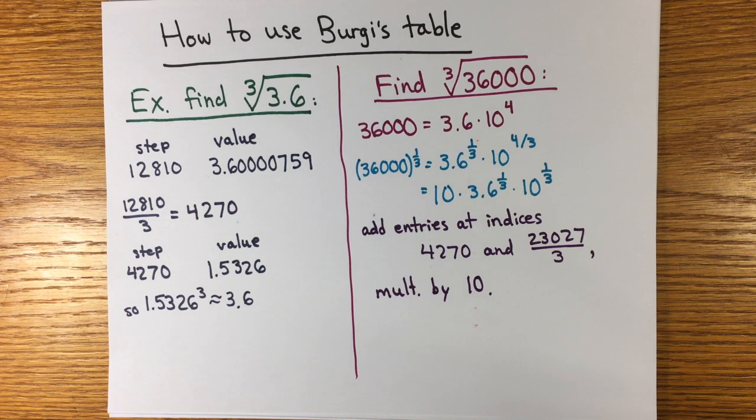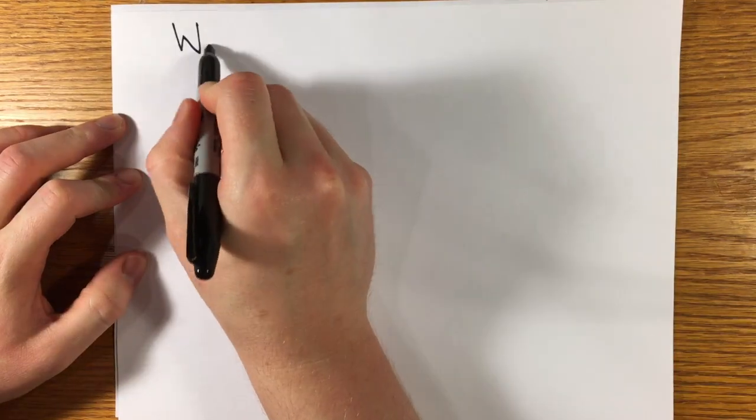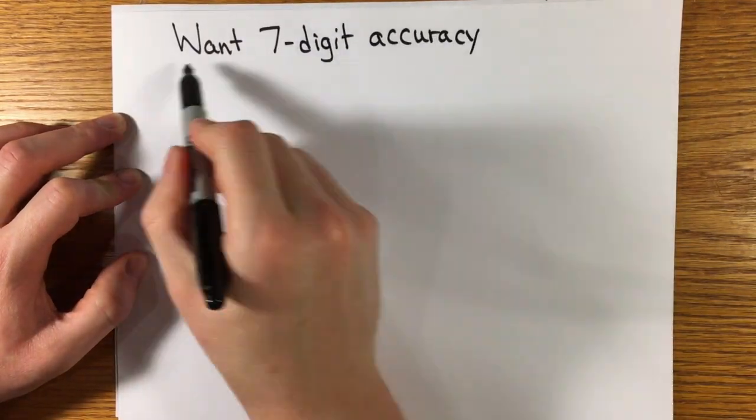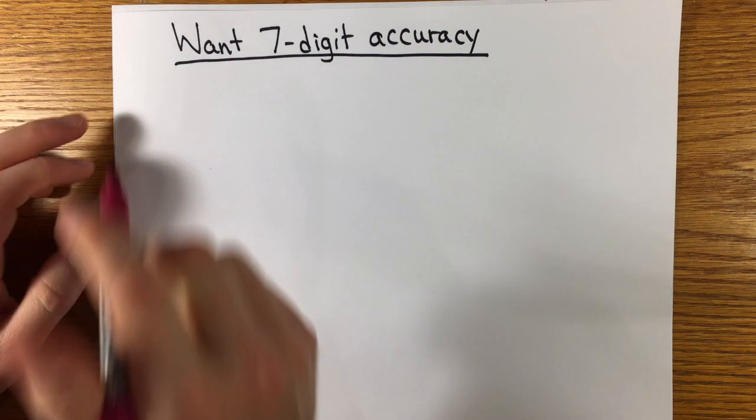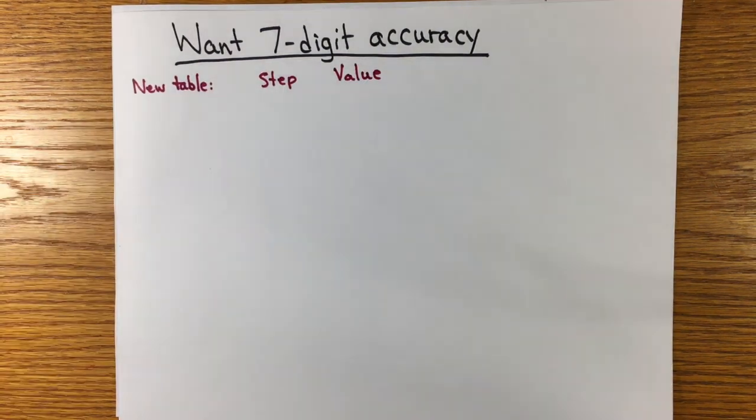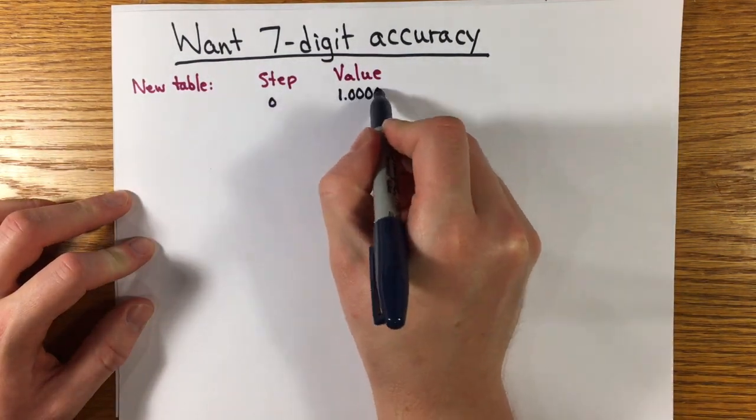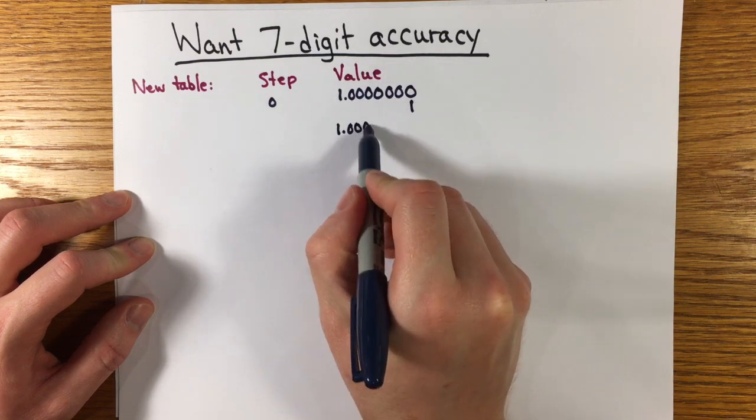I give this example to clarify the exposition in Otto Toplitz's The Calculus, A Genetic Approach, a great book where I learned about a lot of Napier's work. But already for the scientific work of the late 1500s, four places of accuracy wasn't enough, and a few people like Burgi and John Napier set out to make the analogous table with seven places of accuracy.